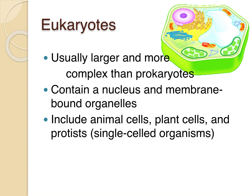Eukaryotes, in contrast to prokaryotes, are usually a little bit larger and more complex. They contain a nucleus, which is the main difference, and they have membrane-bound organelles — meaning small organs within the cell that are encapsulated in a membrane. Eukaryotes include animals, plants, and protists, which are some single-celled organisms.